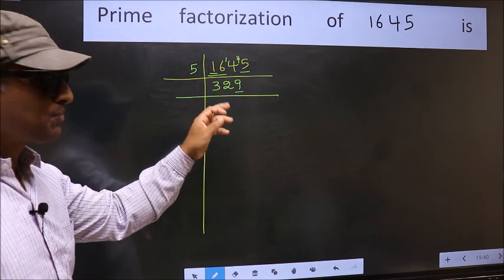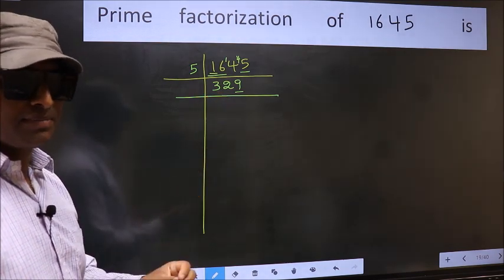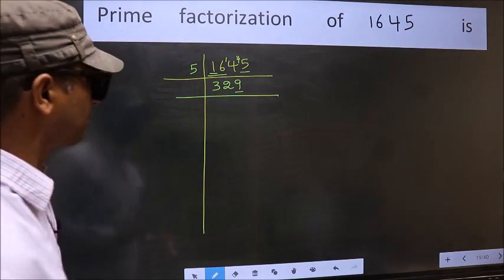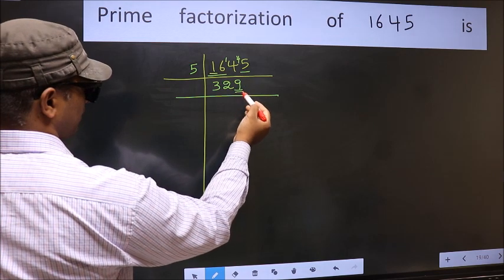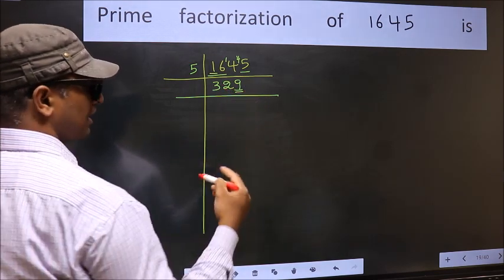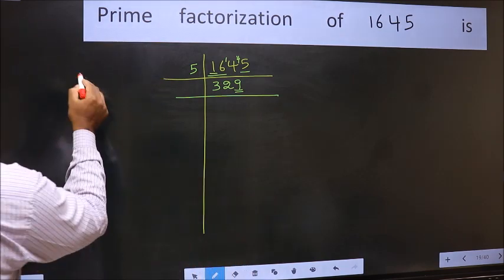So this number is also not divisible by 3. Next prime number is 5. The last digit is neither 0 nor 5, so this is not divisible by 5. Next prime number is 7. Let us check divisibility by 7 here.